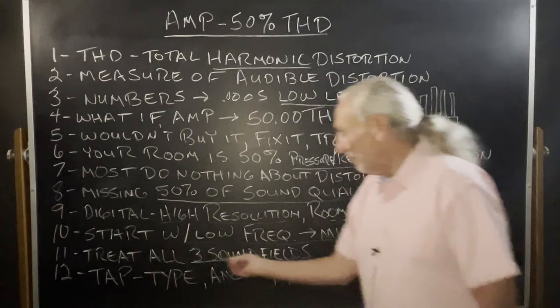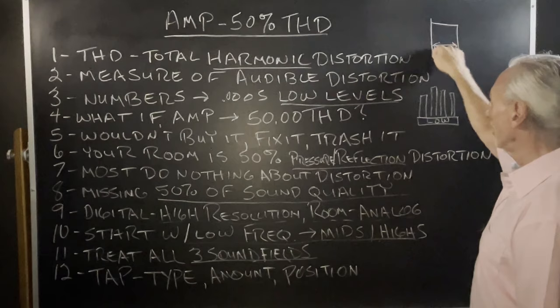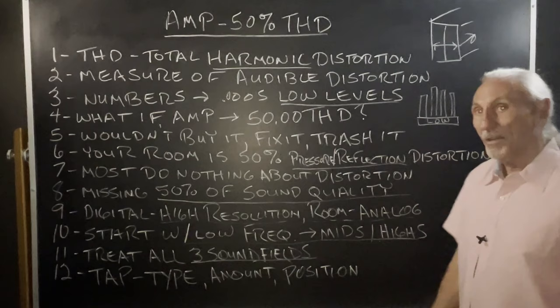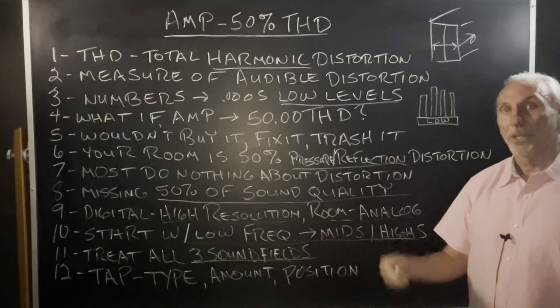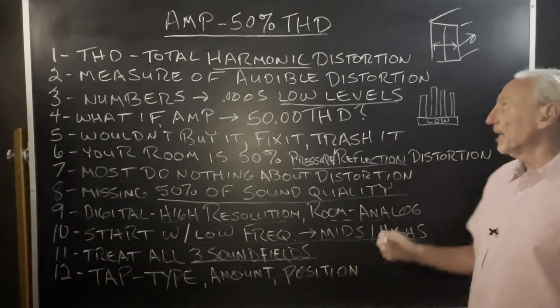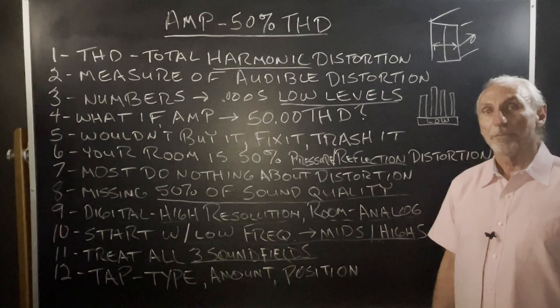Mids and highs are built upon the lows, so we've got to treat all three sound fields in a room. In a room we have the width, the height, and the length — all three sound fields — and they all have different frequency and amplitude issues. They're going to require maybe the same technology for low frequency management, but maybe more on one surface and less on another, depending on the frequency and amplitude of the problem. You've got to know there are three sound fields in a room, each with a different frequency and amplitude issue.